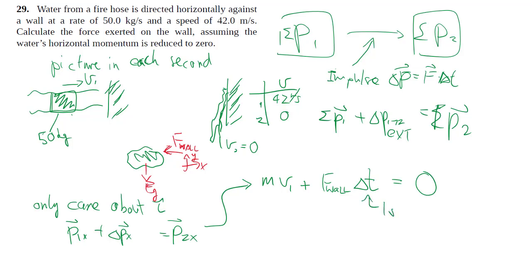Rearranging and solving, unit-wise you get kilograms meters per second squared, which is in newtons. And so we get a negative to tell us that the force from the wall is in fact heading to the left in our case. By Newton's third law, then the force of the water on the wall would be 2100 newtons to the right.